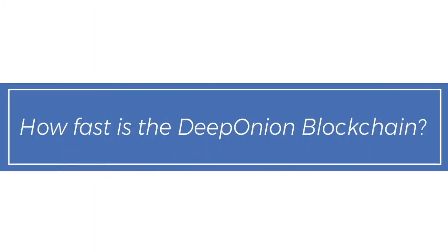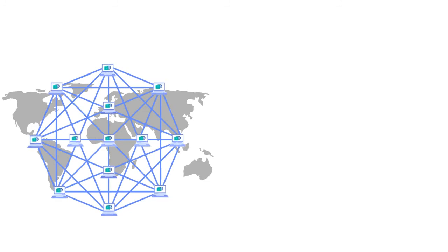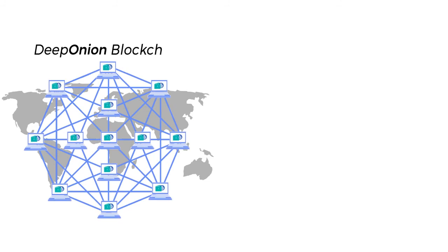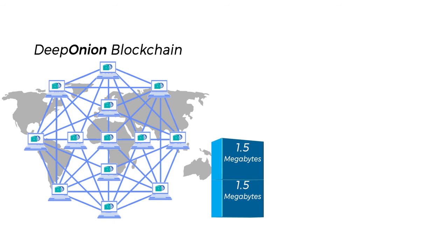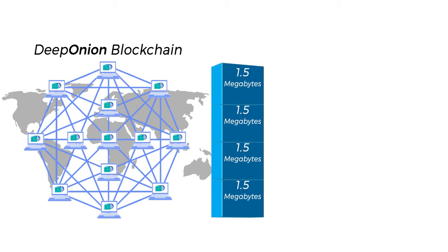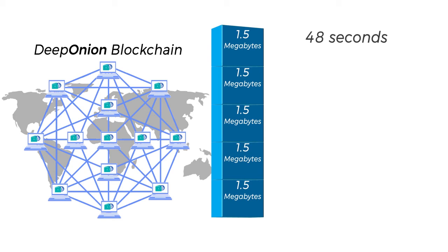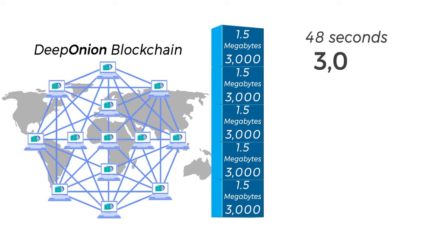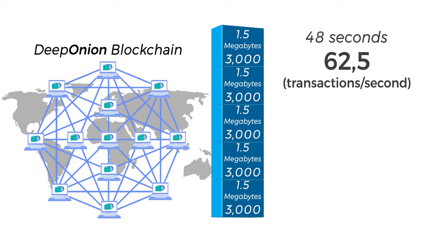How fast is the DeepOnion blockchain? As we have mentioned, the DeepOnion blockchain is really fast. The blockchain is made up of blocks, and each block is 1.5 megabytes. Between proof of work and proof of stake, we create a new block on the blockchain on average every 48 seconds. Each block can hold about 3,000 transactions, so every 48 seconds we are handling 3,000 transactions, which works out to be 62.5 transactions a second.